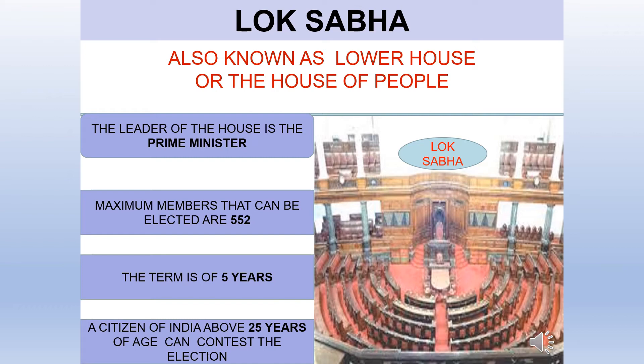The Lok Sabha is also known as the lower house or the house of the people. The leader of the house is the Prime Minister. The members are directly elected by the people. Maximum members that can be elected are 552. The term is of 5 years. A citizen of India above 25 years of age can contest the election. The President can dissolve the Lok Sabha.